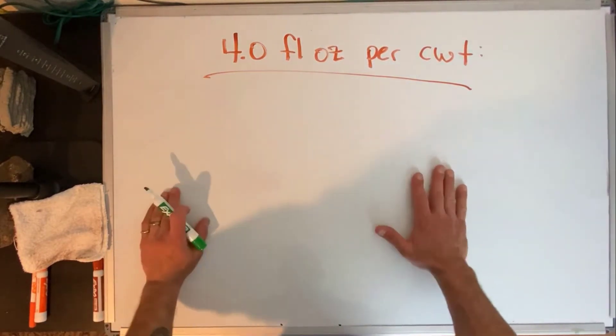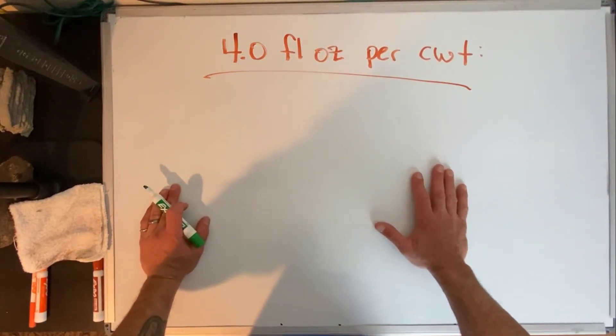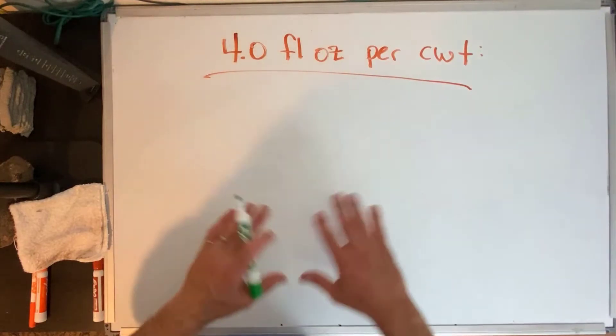We're going to be looking at what does four fluid ounces per hundred weight mean for a cubic yard worth of material.